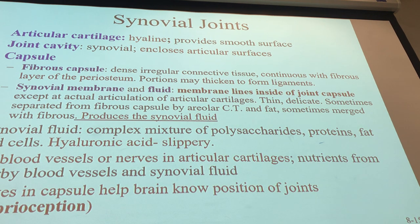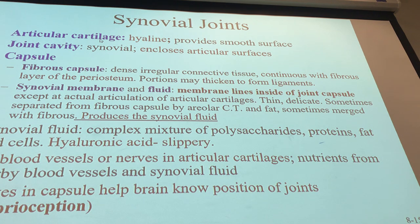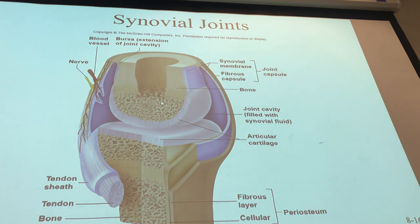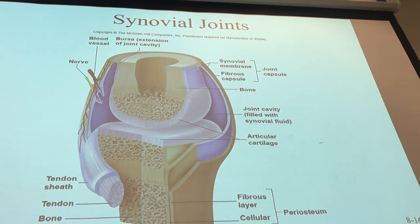So what do all synovial joints have in common? Looking at a general diagram — this could be between two metacarpal bones or a metacarpal and a phalangeal bone — we see that synovial joints have articular cartilage lining the ends of the long bones. Because you're moving your fingers a lot during the day, there needs to be cartilage on the ends to prevent bone-on-bone rubbing.